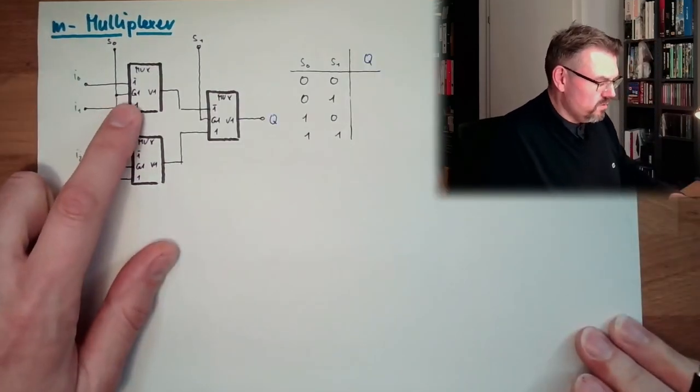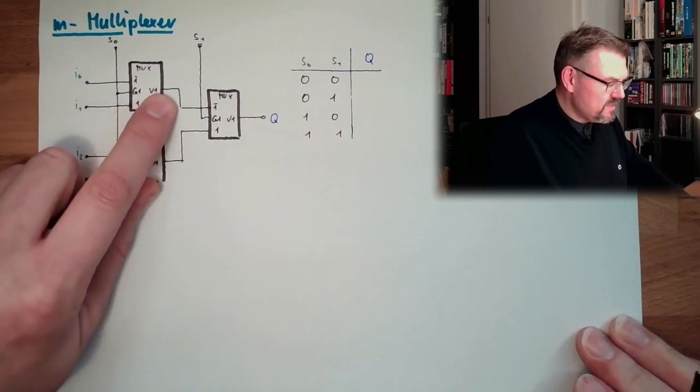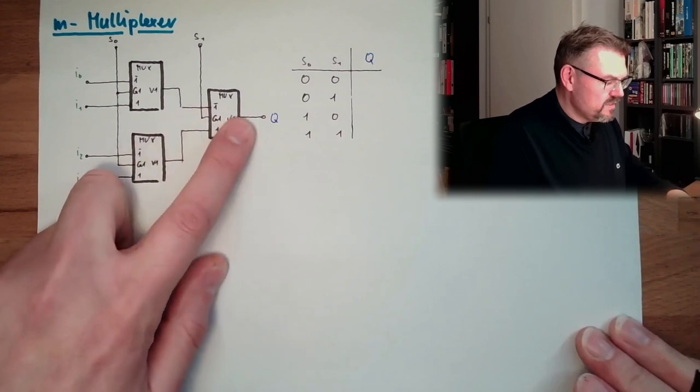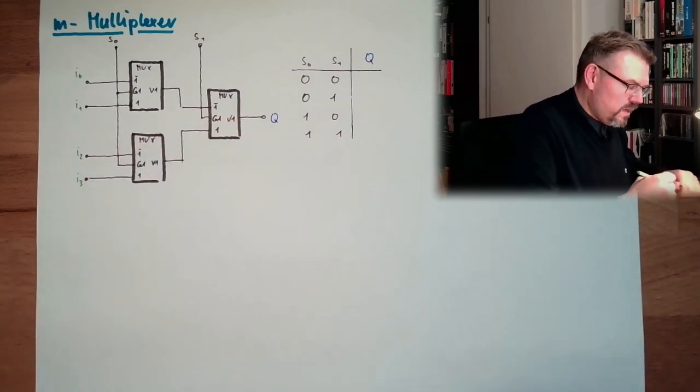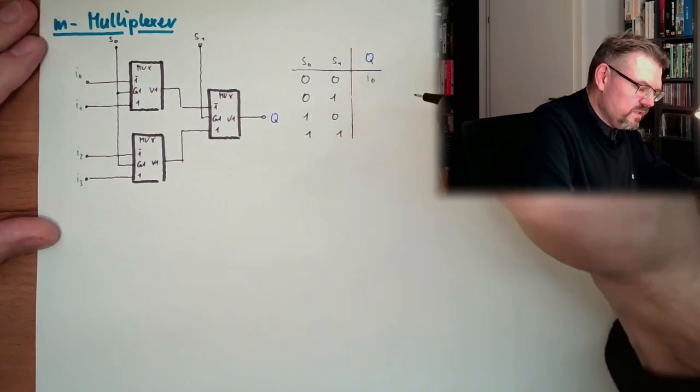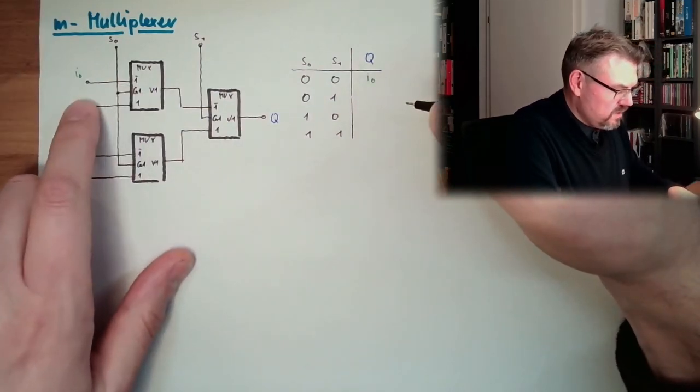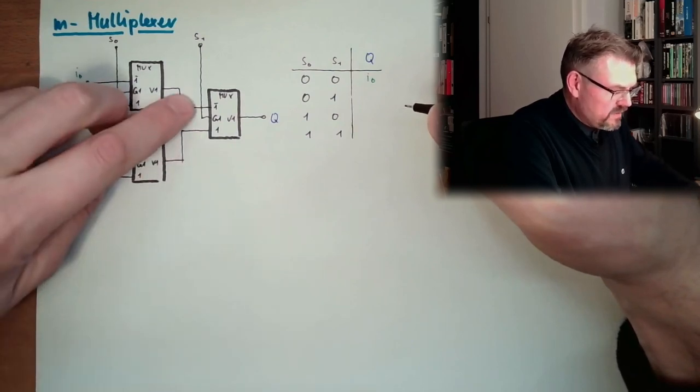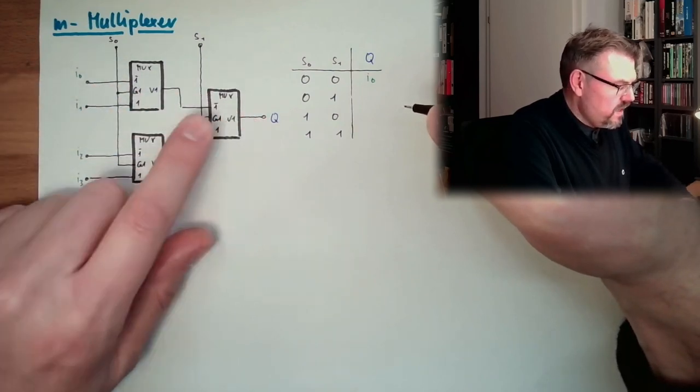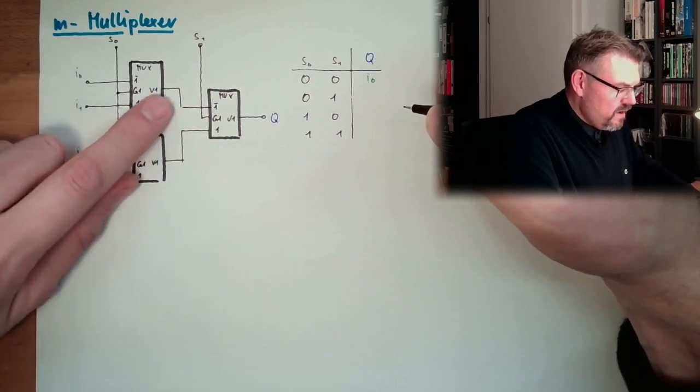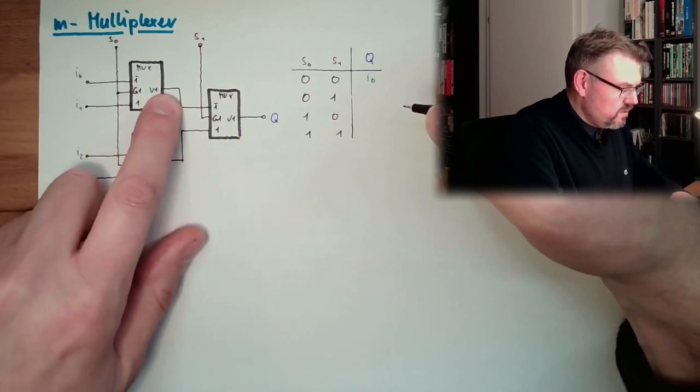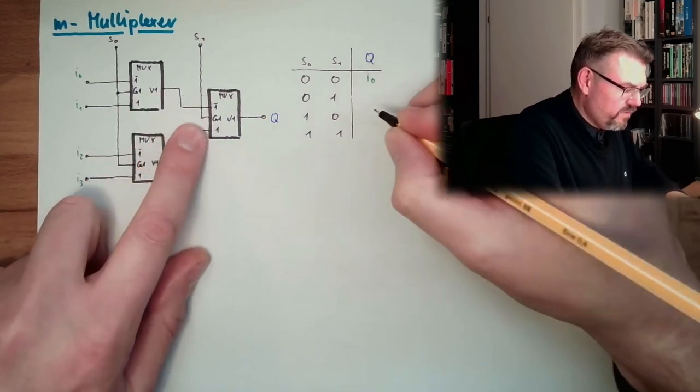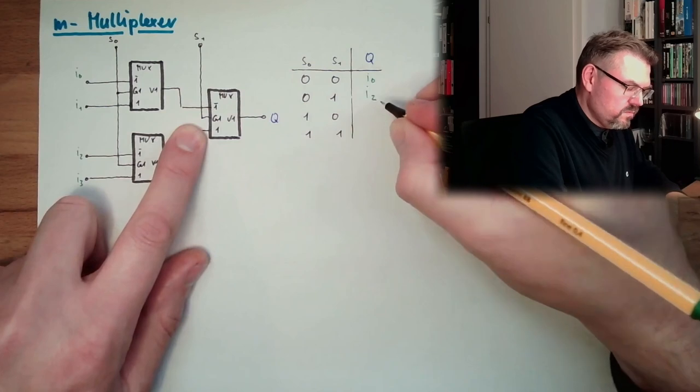If both are 0, then here we would have I0, and here we would have I2, and here we would select I0. So here I0 is appearing. Because here we select here with I0, here is I2, and here we have I0 and I2, and I select I0. And here we have I0 and here I2, however, I select here a different one, this is I2.